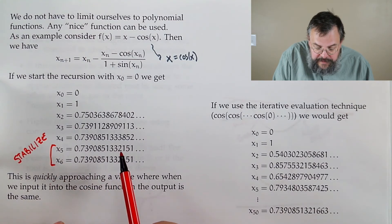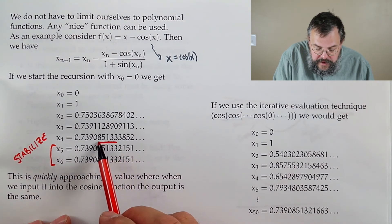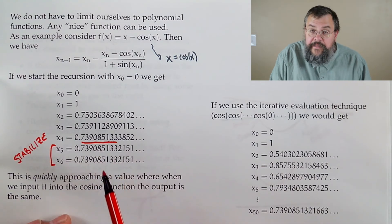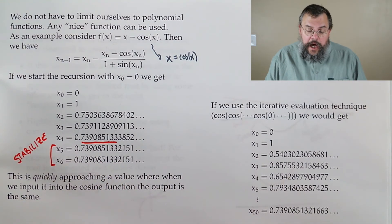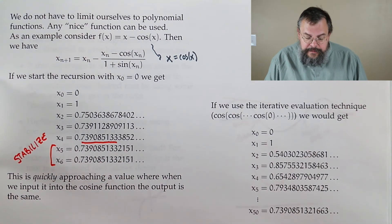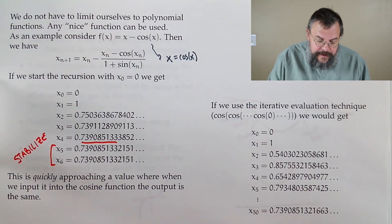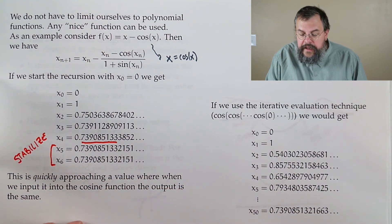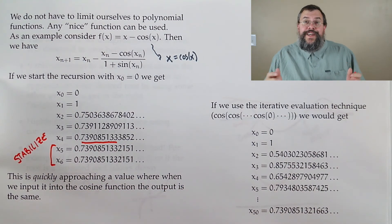And notice how quickly it converged. Indeed, even after four steps, we already were up to, how many digits is that? One, two, three, four, five, six, seven, eight, nine digits. Amazing.